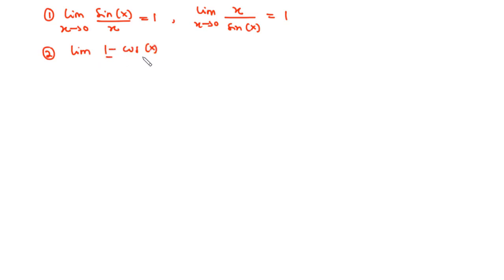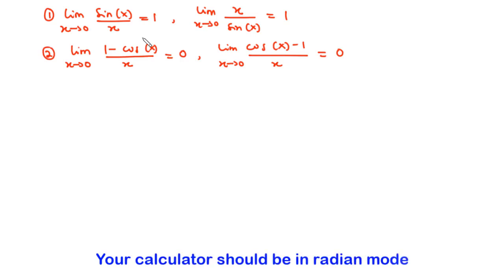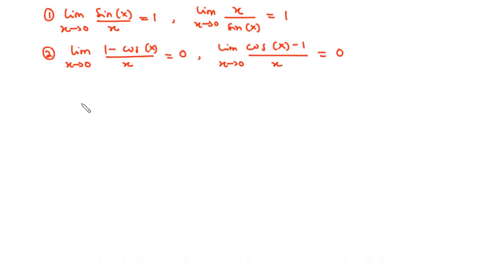Secondly, we have the limit of 1 minus cos x divided by x as x approaches 0 is equal to 0. The limit of cos x minus 1 divided by x as x approaches 0 is also equal to 0. These are the two main equations that are going to help us solve any given problem. You can test the validity of these equations by substituting in the value that x is approaching and you will get the values on the right-hand side.